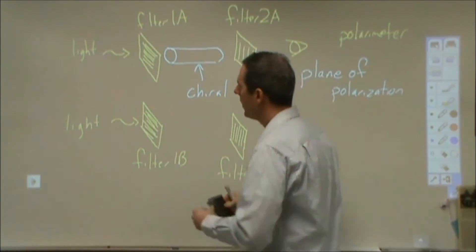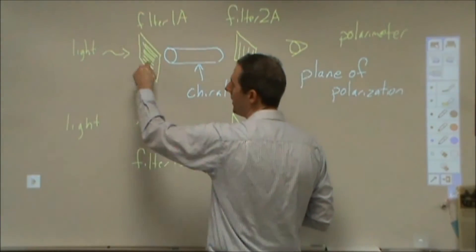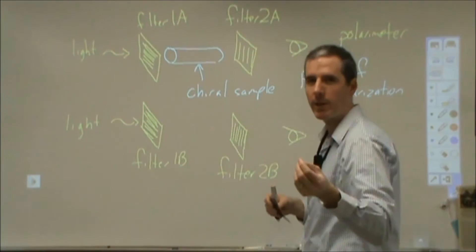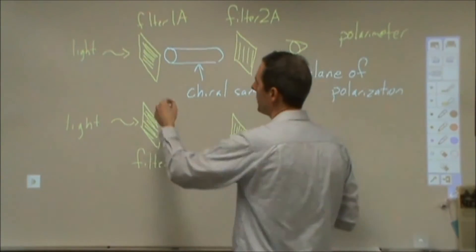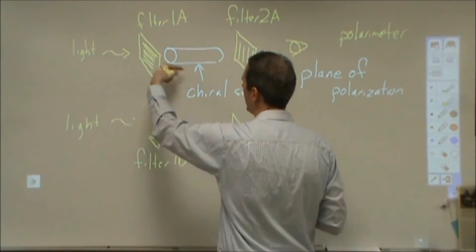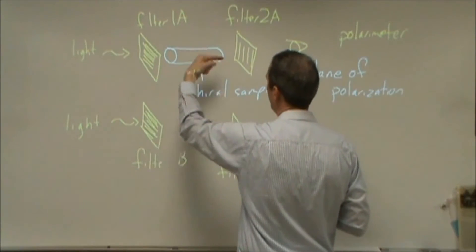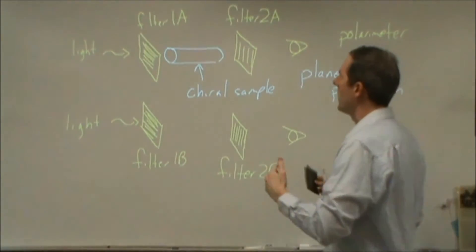So when we talk about the plane of polarization, what we mean is we mean what direction the electric fields are oscillating in. So in this case, electric fields are going to be oscillating into and out of the plane of the board, that's the plane of that polarized light.